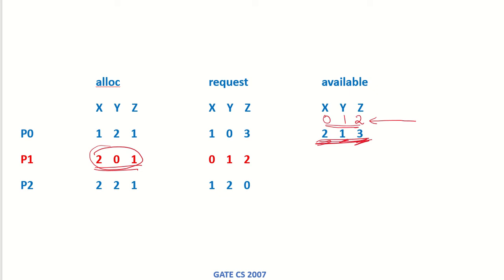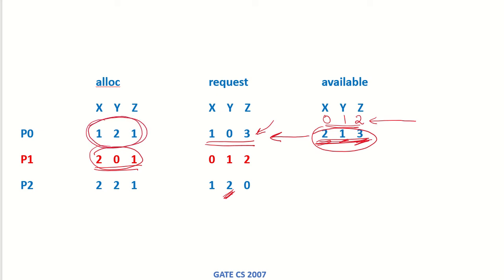Looking at which process request can now be entertained, we see that the request of process P0 can be managed with these available resources. For P2, it is requesting 2 of Y, which cannot be managed currently. So we give the available resources to process P0. Process P0 finishes its execution and releases its allocated resources, which are added to the currently available resources, making them 3, 3, and 4.